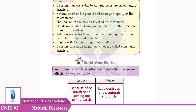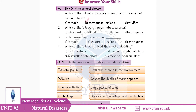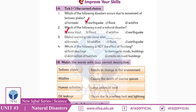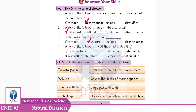Now the correct choice exercise. Which of the following disasters occurs due to the movement of tectonic plates? Earthquake — very good. Which of the following is not a natural disaster? Mine blast — right. Global warming can cause wildfire. Which of the following is not the effect of flooding? Cracks on roads and buildings.